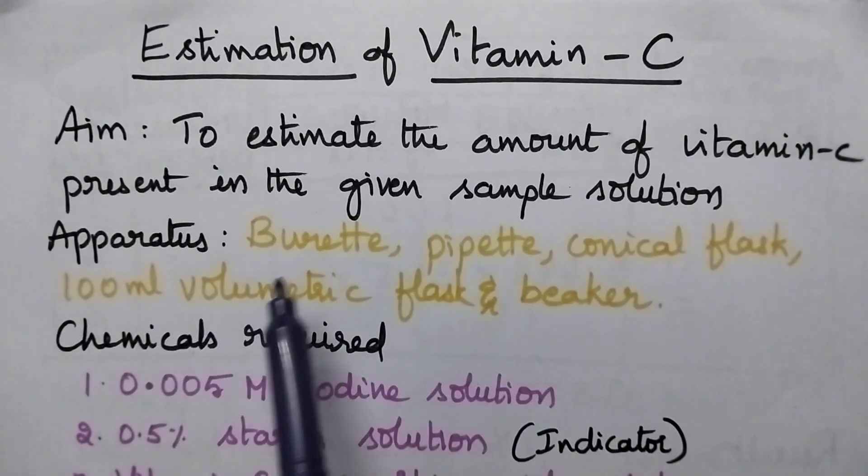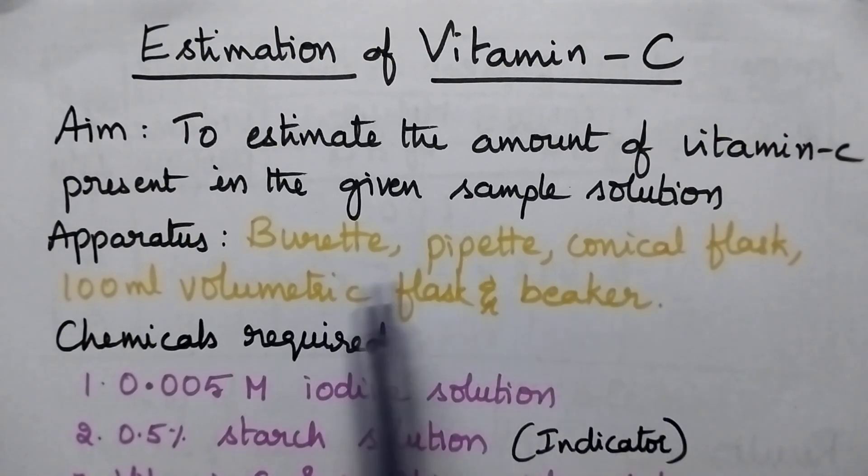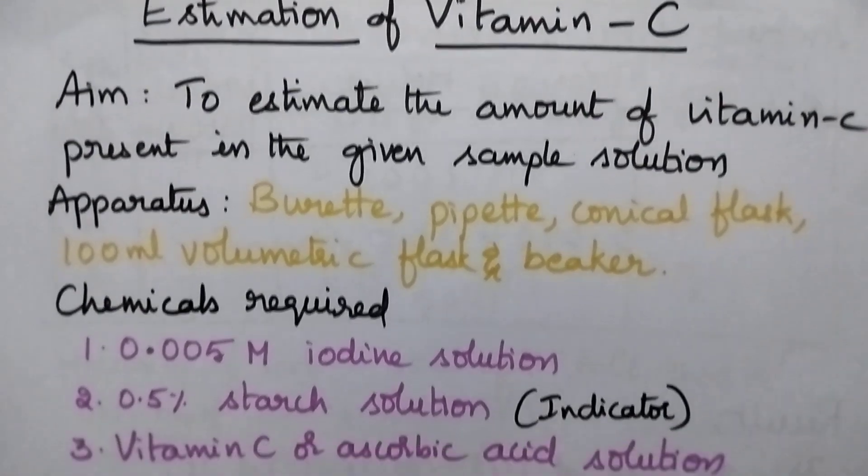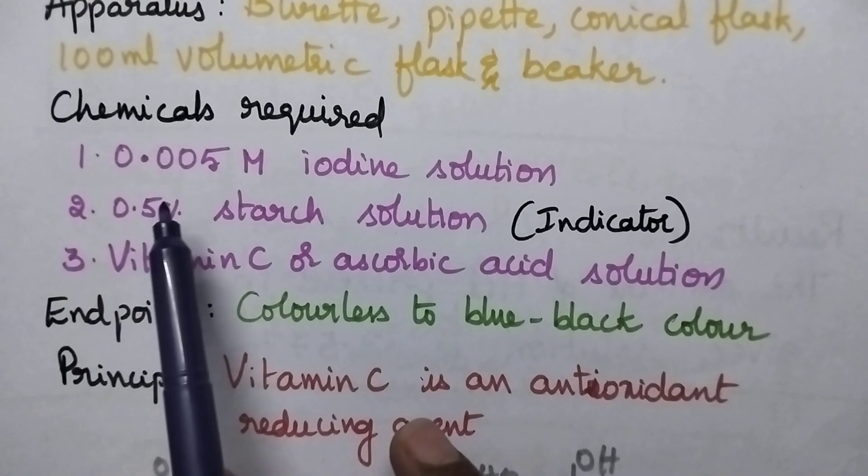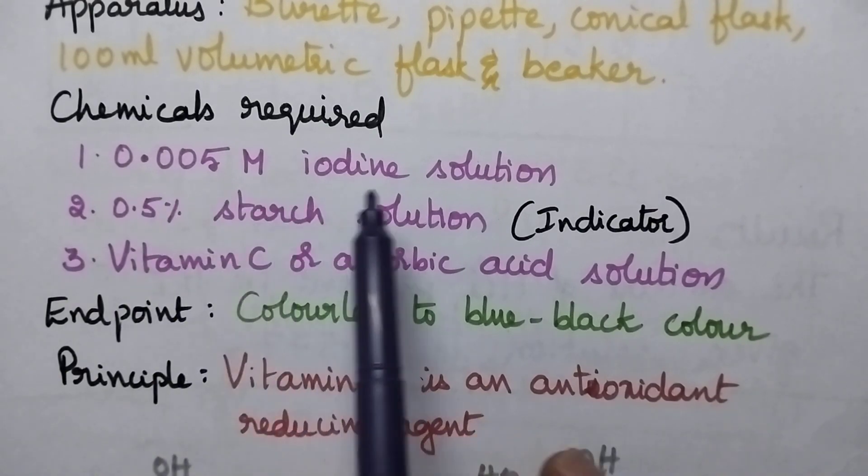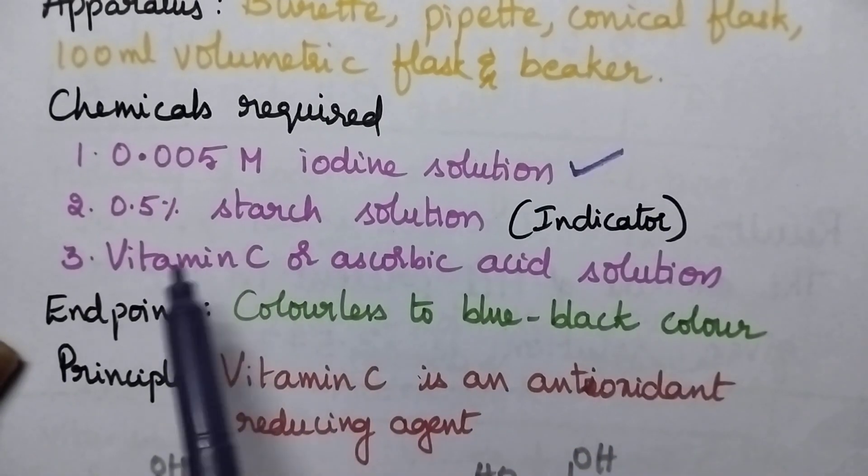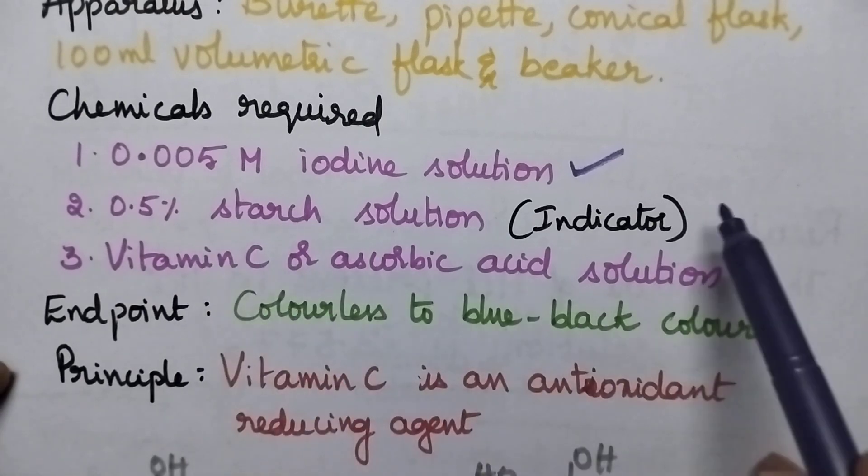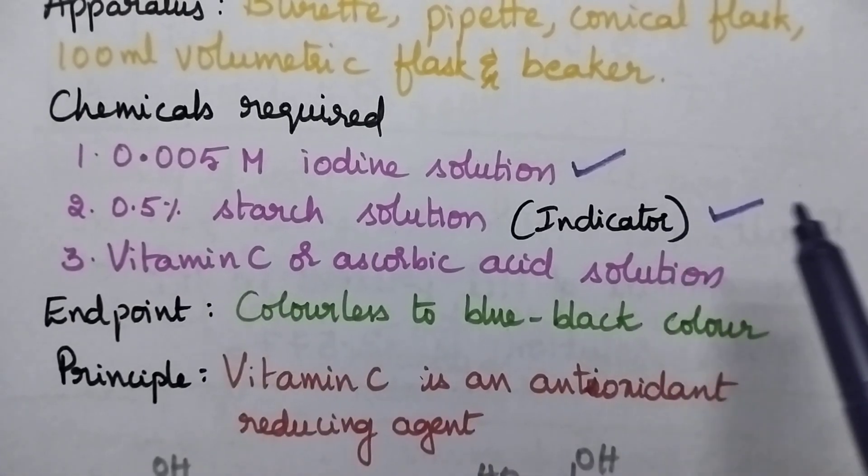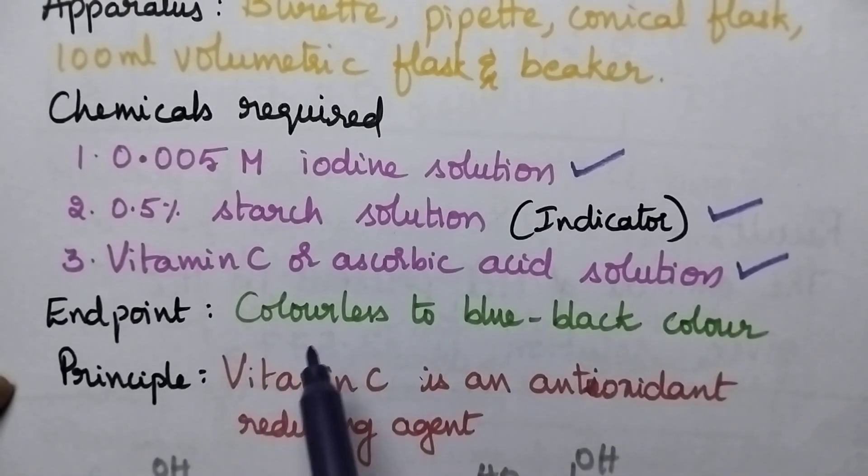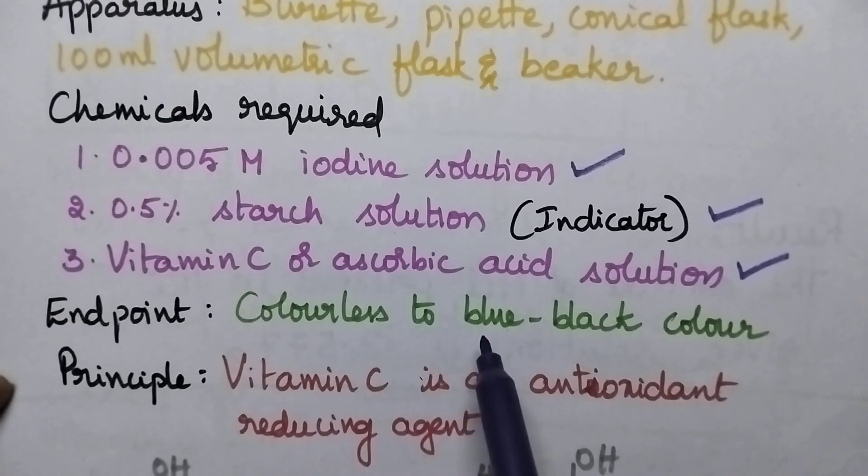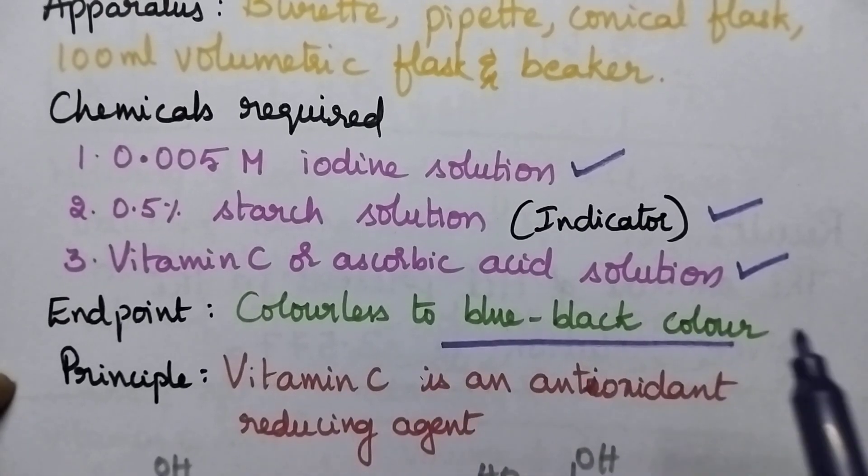Apparatus used are burette, pipette, conical flask, 100 ml volumetric flask, and beaker. Chemicals required include 0.005 molar iodine solution, 0.5 percent starch solution as indicator, and vitamin C solution. At the endpoint, the colorless solution will be converted into blue-black color.